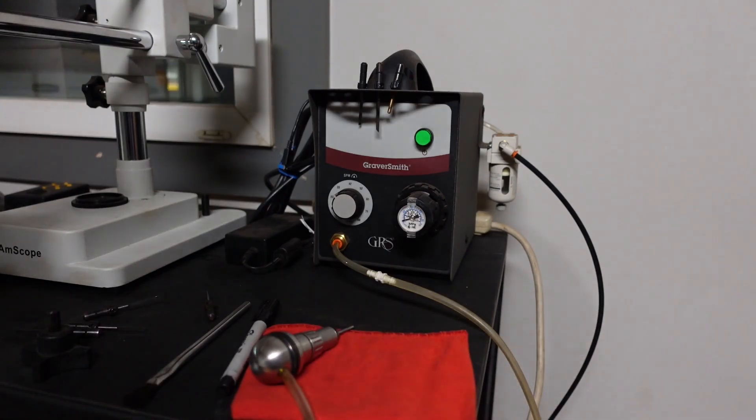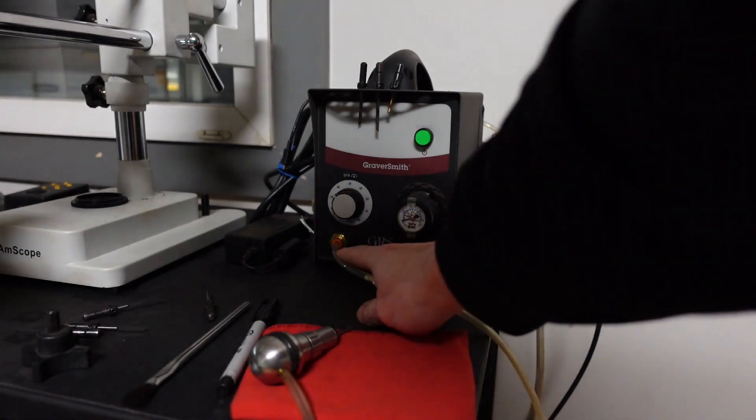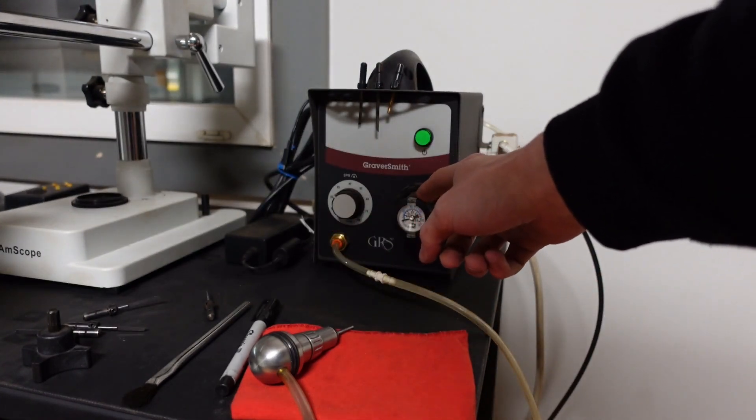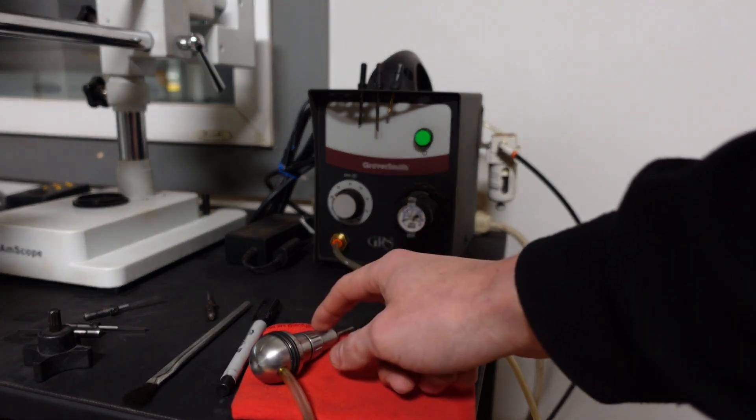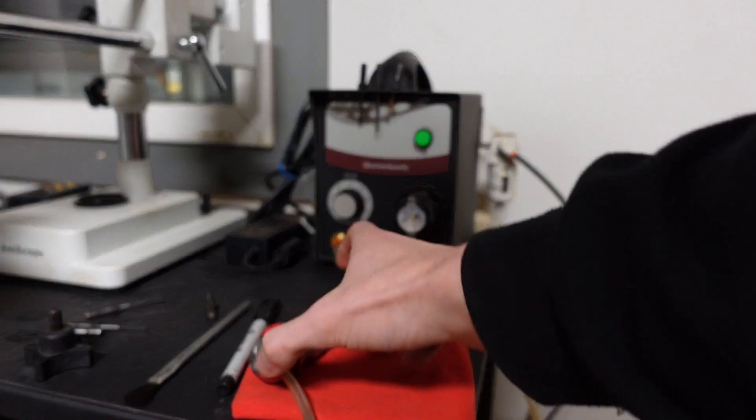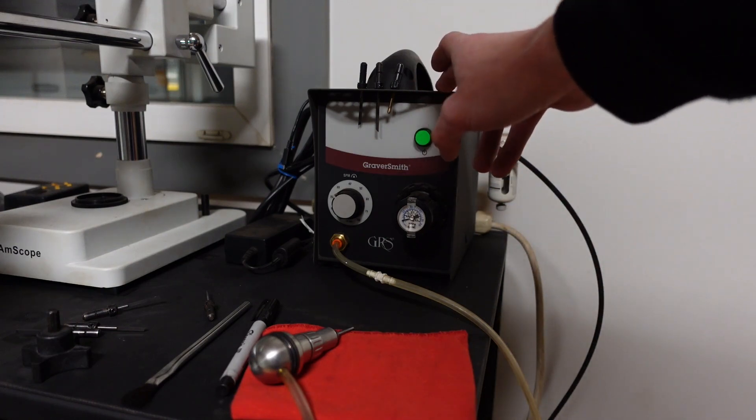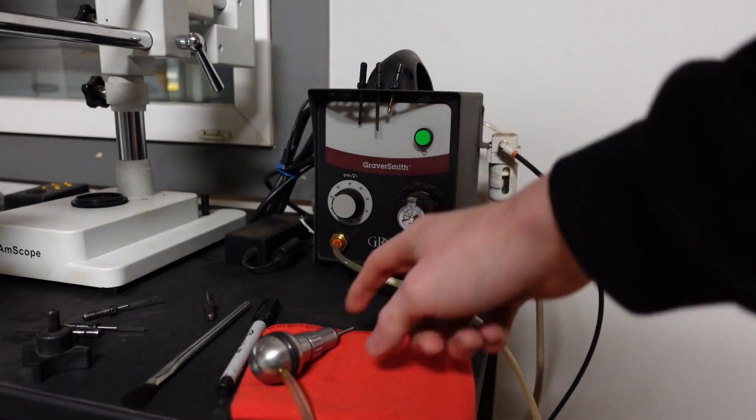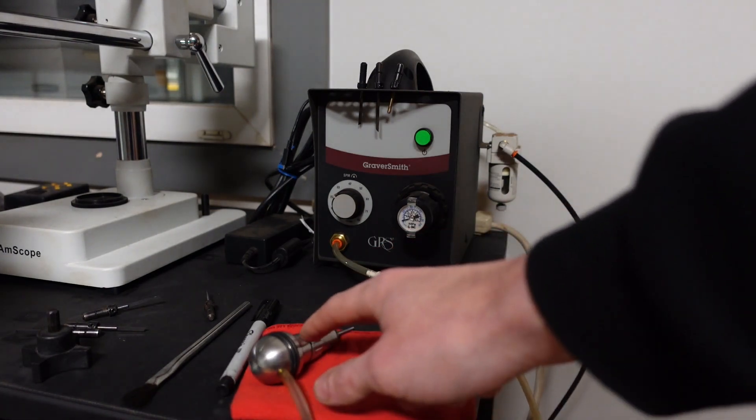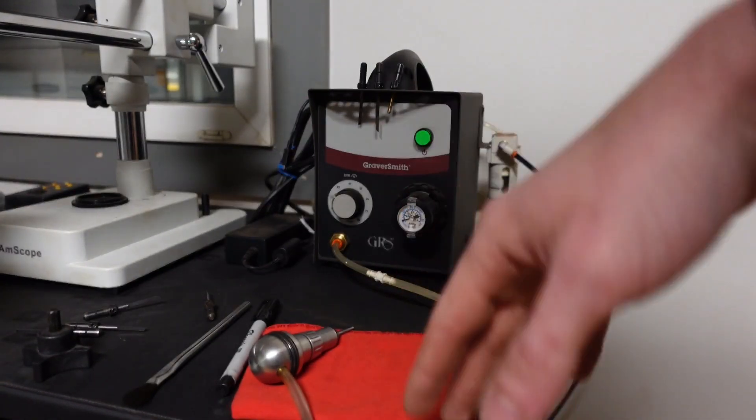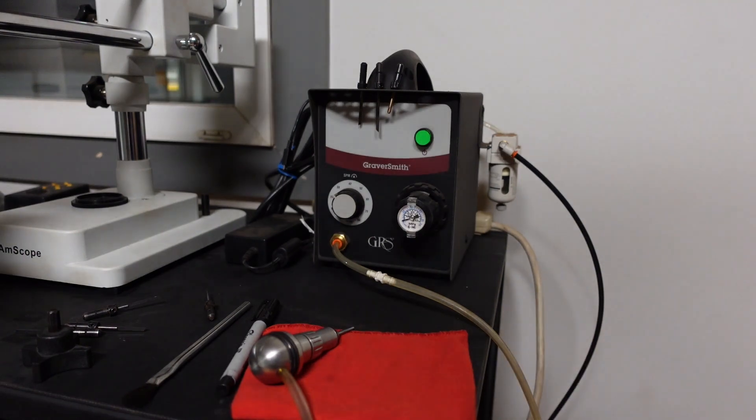I use a GRS Graversmith higher-end model. This is like the beginning model from GRS. It has very basic functions. It has one spot for one handpiece, a strokes per minute dial, and then a regulator you use in tandem with your handpiece to figure out how much pressure you need so that your handpiece works properly. They have a video and paperwork that tells you how to set this up because every handpiece inside has a piston, each piston weighs a different amount, so you have to set this differently.